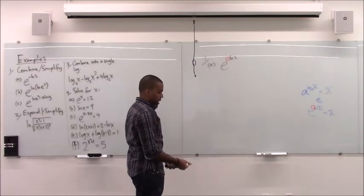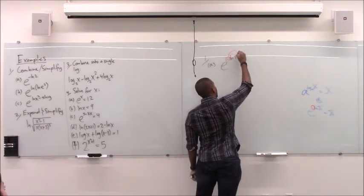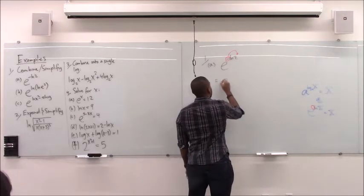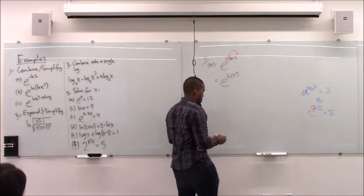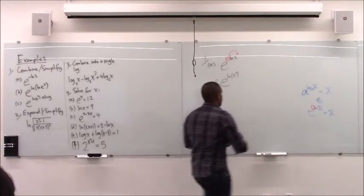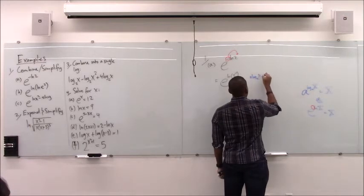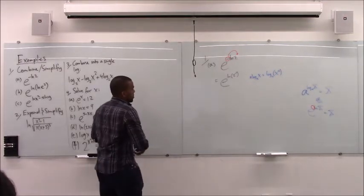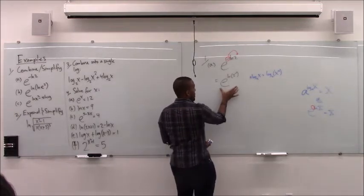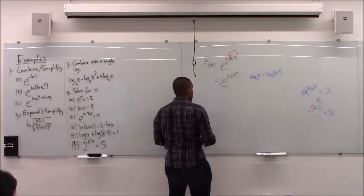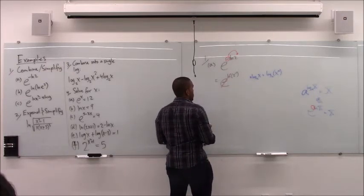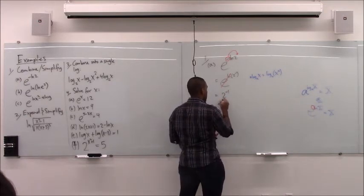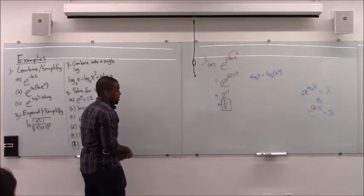We do know a way to get that out of the way — we can move this up into the power by another rule. So this is e to the ln of 2 to the minus 1 power, made by the rule: e to the n times log base a of x lets you take n from in front and move it to the power of x. Now in this form the rule applies; I can cancel the e and the ln, and I'm left with 2 to the minus 1, or one half.